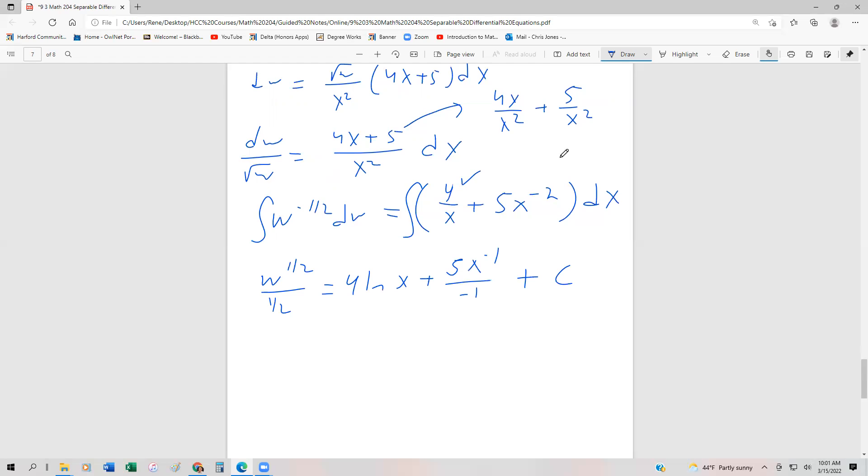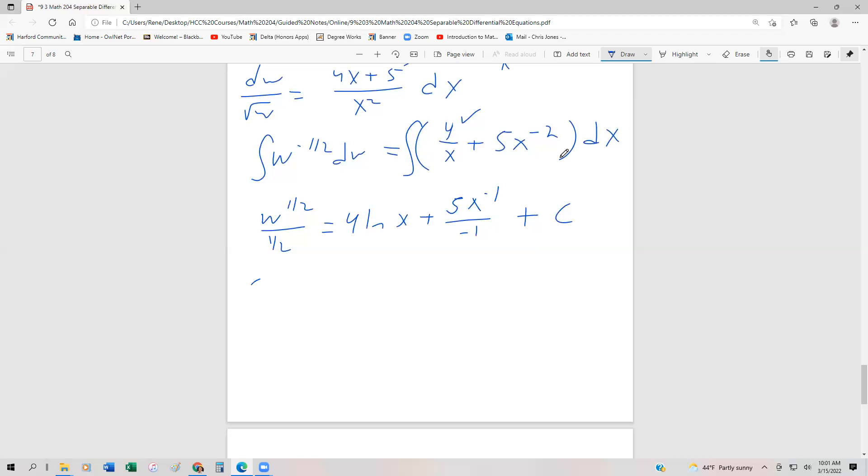Now if we simplify this a little bit, we can write this as 2w to the one half equals ln(x⁴) by using that rule of logarithms, minus 5 over x plus c. Just moving the x to the minus 1 back down to the denominator and pulling the negative 1 out.